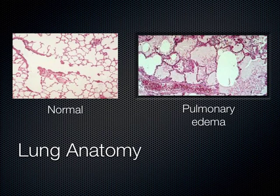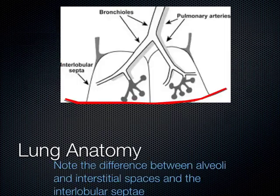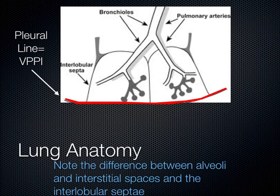The pleural line is also referred to as the VPPI — the visceral parietal pleural interface — basically where the visceral and parietal pleura come together and move on each other. The terminal bronchioles go all the way to the periphery of the lungs, and the interlobular septae come up to the surface in a perpendicular fashion. Most of these interlobular septae are about seven millimeters apart — keep that approximate spacing in mind, as it will explain some of the artifacts we see.